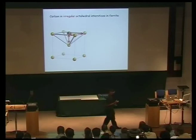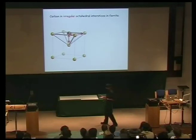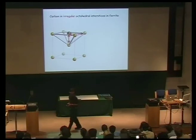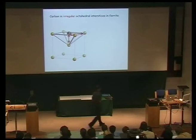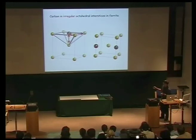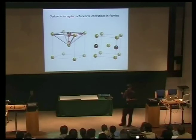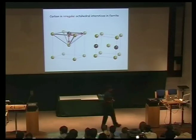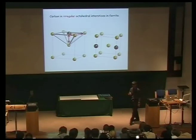A carbon atom in ferrite will cause an immense amount of hardening because it interacts with the shear components of the strain field of a dislocation and also the hydrostatic component. So a very small concentration of carbon has a huge effect on the strength of body-centered cubic ferrite. In your notes, I've actually drawn the locations of the carbon atoms in body-centered cubic ferrite. We now understand why carbon causes a great deal of hardening in ferrite but not in austenite.